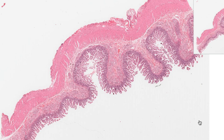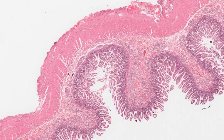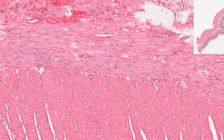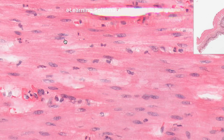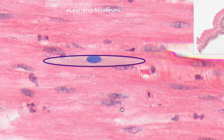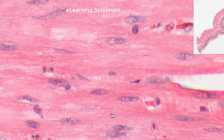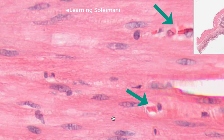In this slide we examine the smooth muscle, which is visible in both longitudinal and transverse sections. Smooth muscle cells are spindle-shaped and surrounded by loose connective tissue.